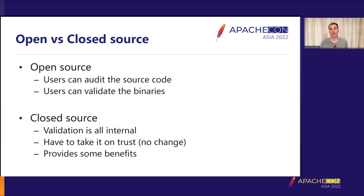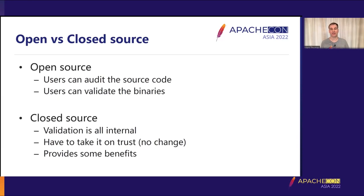There are some differences when we look at closed source. In open source, you've essentially got the opportunity to validate both the source code and the binaries. With closed source, all of that validation is internal, so you as a user have to take it on trust that the vendor is providing the correct binary. That's really no change from what it's always been. But reproducible builds still provide some benefits for internal checks — for example, if the vendor wants to confirm their build system hasn't been compromised, they can build on a standalone secure system and check the binaries are identical to those their main build system produces.